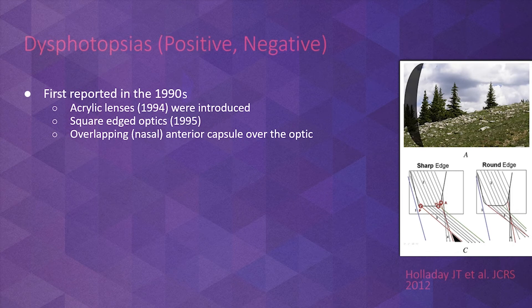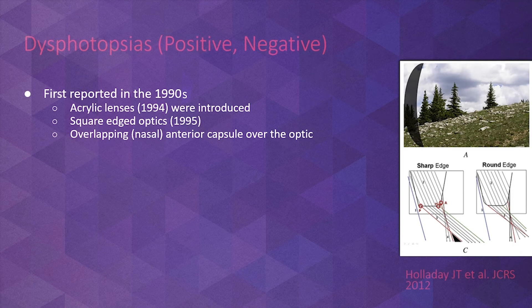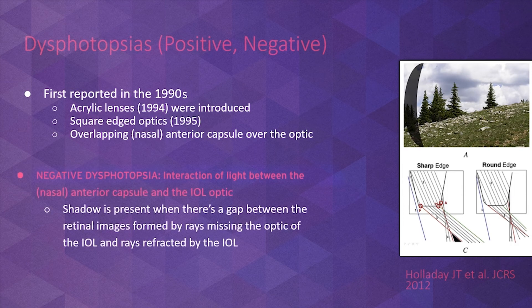Dysphotopsia is of two varieties. Patients with positive dysphotopsia complain of seeing starbursts or arcs of light in any situation where the surroundings are illuminated. The cause for positive dysphotopsia is thought to be the square edge design and the acrylic material of the intraocular lens optic. The focus of our presentation is negative dysphotopsia; while the acrylic material and square edge are thought to contribute, the single most important factor is thought to be the overlap of the capsulorhexis margin over the edge of the optic of the intraocular lens.